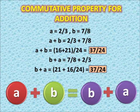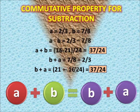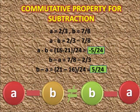So what do we see? We see that a plus b is equals to b plus a — we are getting the same result in both cases. So addition is commutative for rational numbers.